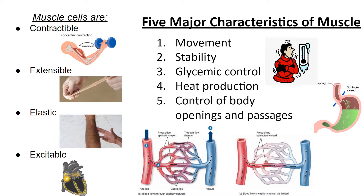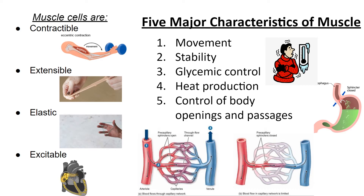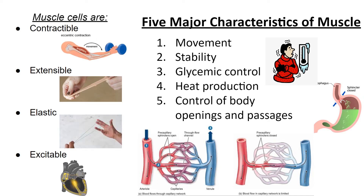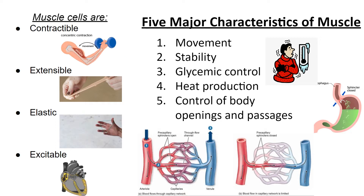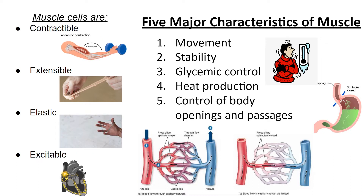Muscle cells must also be able to stretch without tearing, which is referred to as extensibility. Imagine that your bicep could contract, but when you extended your arm, your cells would not elongate — you would be stuck in a permanently flexed position. That would definitely not be good for movement. In addition to being able to elongate, they must also be able to return back to their original shape, which is referred to as elasticity.